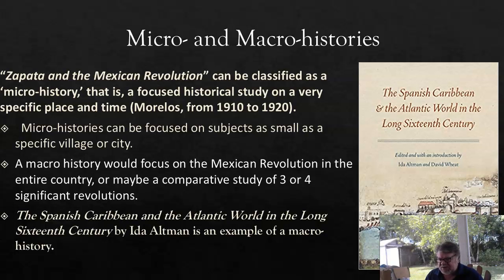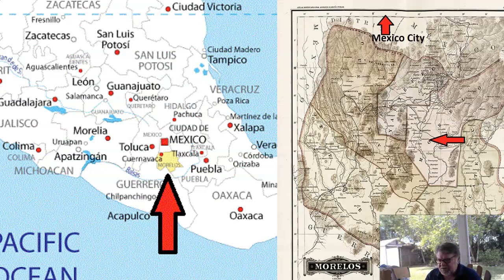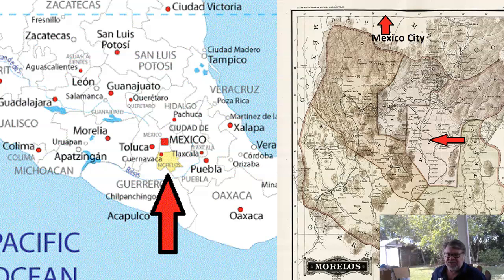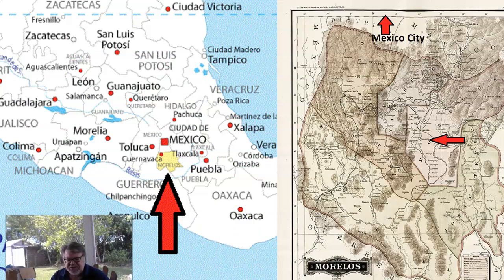An example of a macro history is The Spanish Caribbean and the Atlantic World in the Long 16th Century by Ida Altman — she focuses on the Spanish Caribbean islands over more than a century. Here's a map of the area: the state of Morelos is shaded in yellow, immediately south of Mexico City. On the right is a blown-up map of Morelos, with a red arrow pointing to the hometown of Emiliano Zapata.